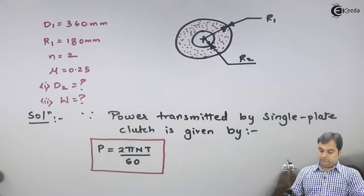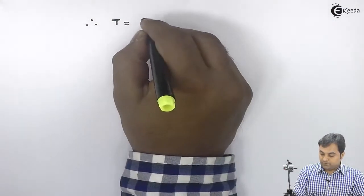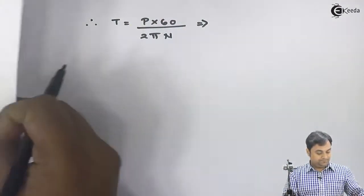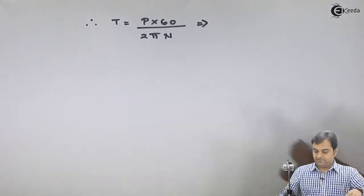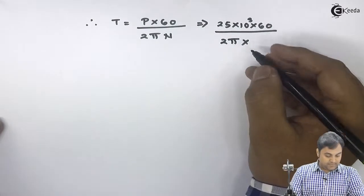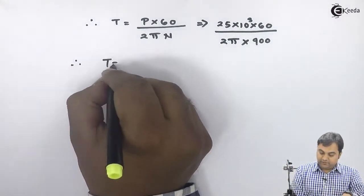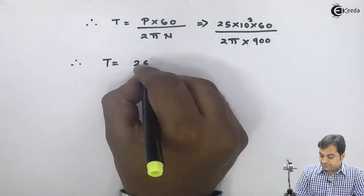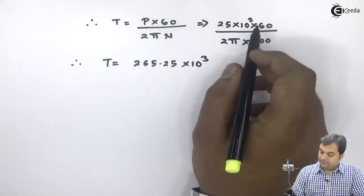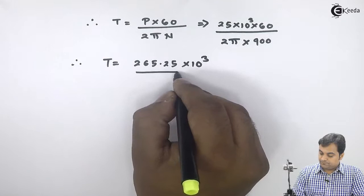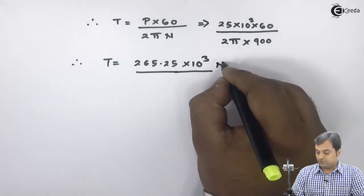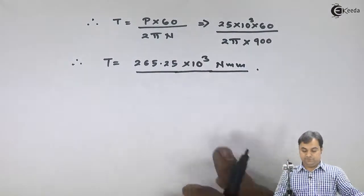T equals P into 60 divided by 2 pi N. Power in this problem is 25 into 10 raise to 3 watts, divided by 2 pi into N which is 900 rpm. From this I get the value of T as 265.25 into 10 raise to 3 Newton mm. So here I am getting the torque in terms of Newton mm.